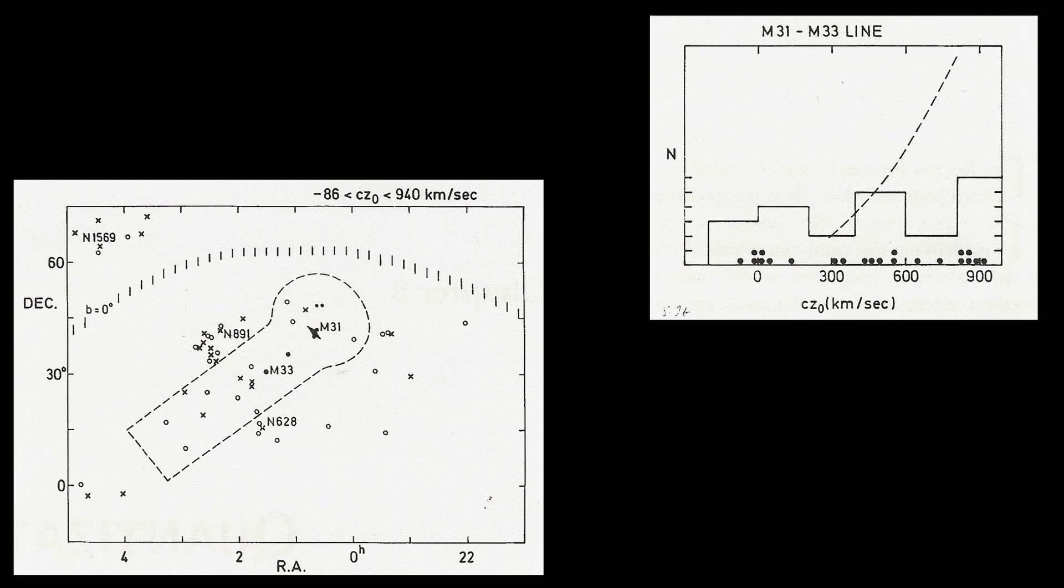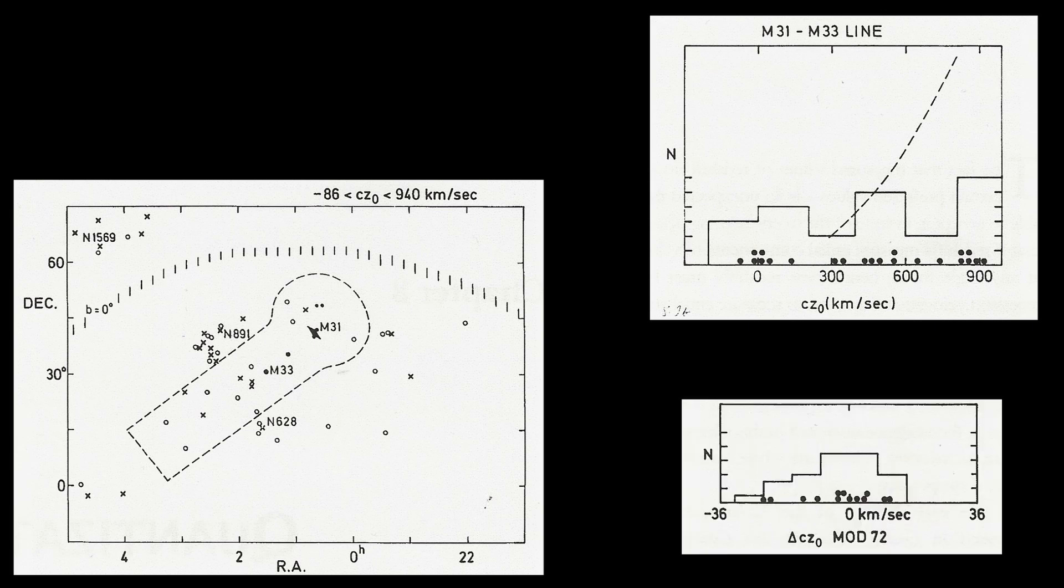We can easily see that these are not background galaxies in the diagram. As if they were you would expect this to increase sharply with fainter apparent magnitudes. More importantly is that this group shows a strong periodicity at 72 kilometers per second.